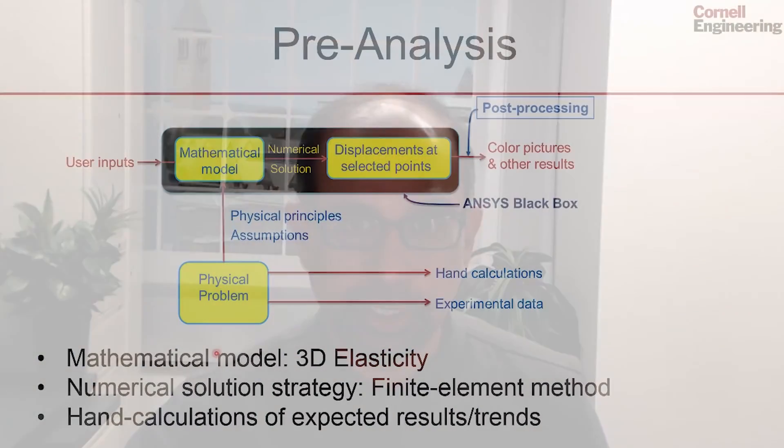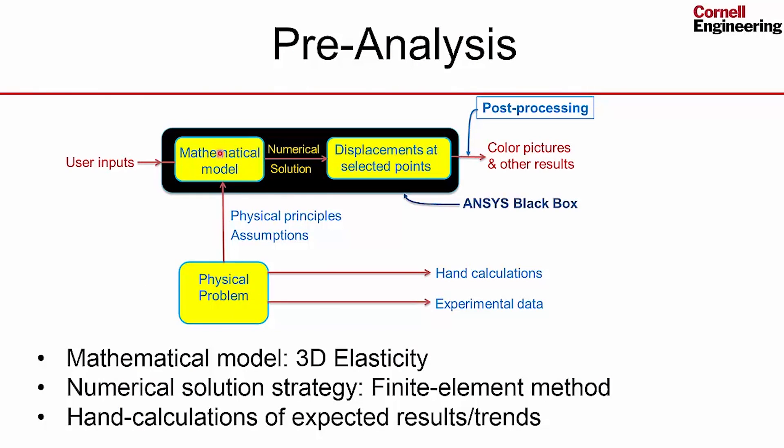Before we get into ANSYS, let's do the pre-analysis, as usual. The mathematical model is based on 3D elasticity, so it's a very similar mathematical model to what we saw in the bike rank case, but it includes a couple of additional complications and we'll see what they are.